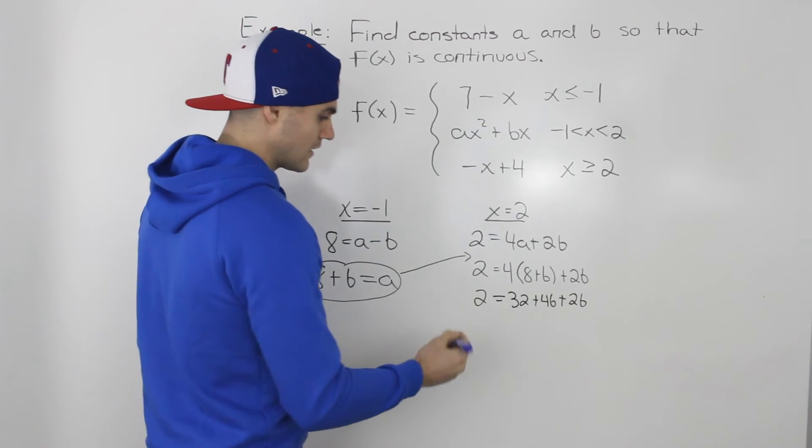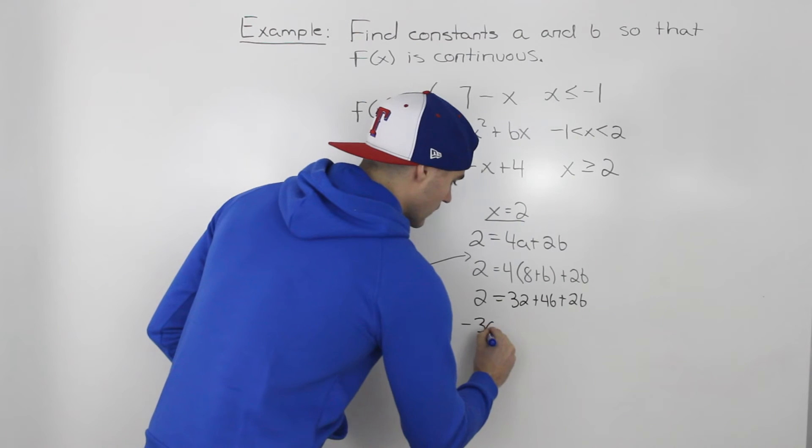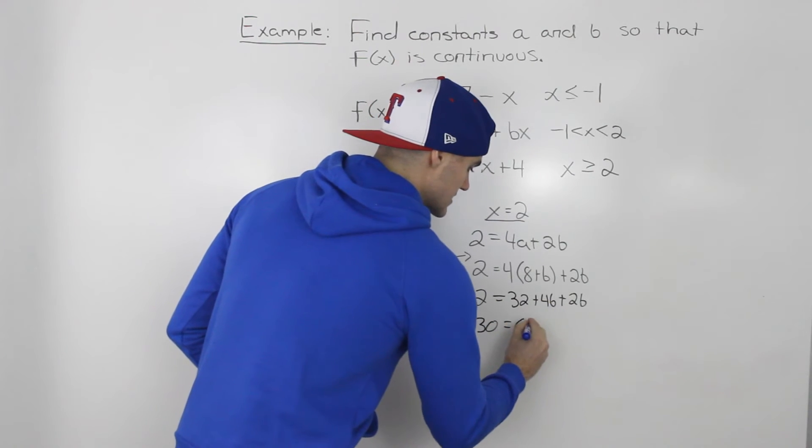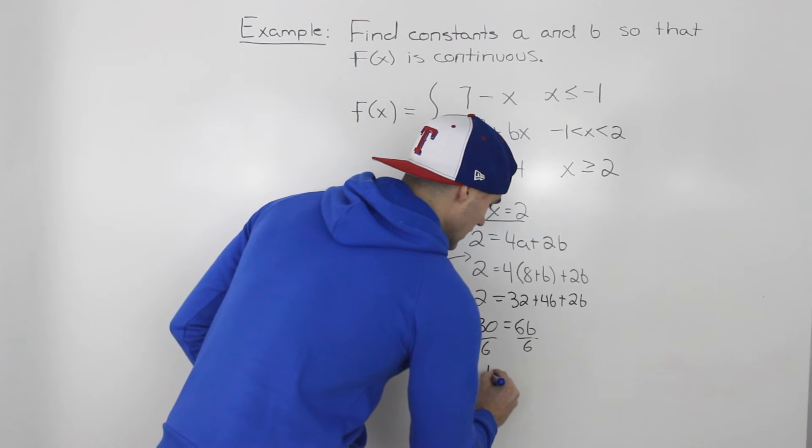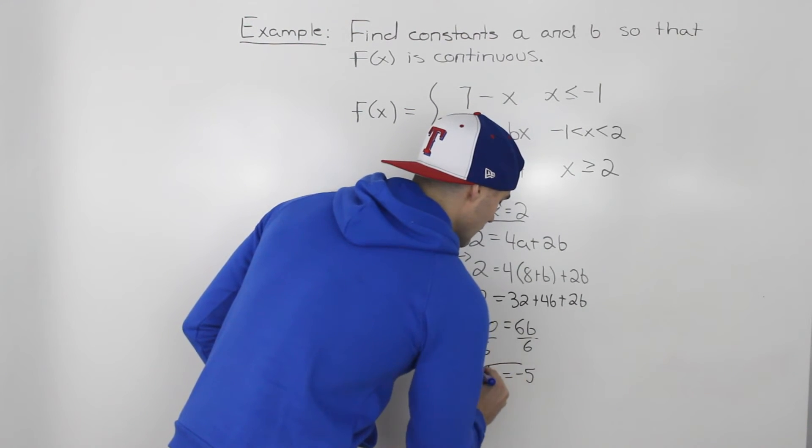Bring the 32 over. 2 minus 32 is negative 30. And then 4b plus 2b gives us 6b. Divide both sides by 6, so we get a b value of negative 5.